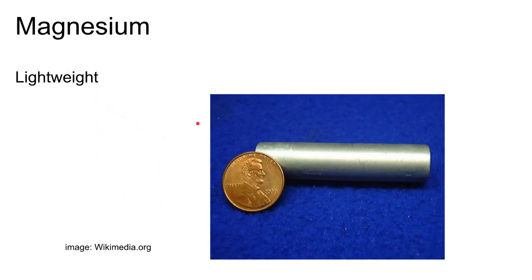Magnesium is at the other end of the spectrum — a very lightweight material. It will actually catch fire if you get it too hot; an ingot of magnesium can be lit with a really brilliant white flame. The reason you'd use magnesium is if you needed a very lightweight metal with good strength-to-weight characteristics and very low density.